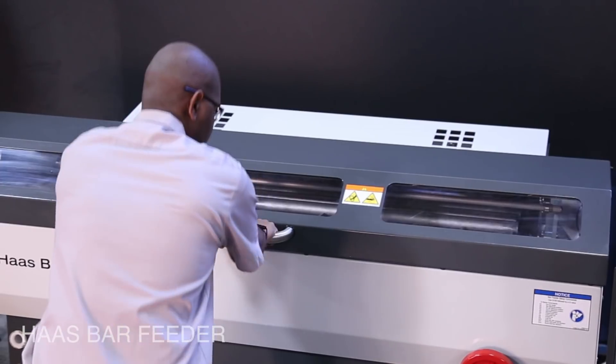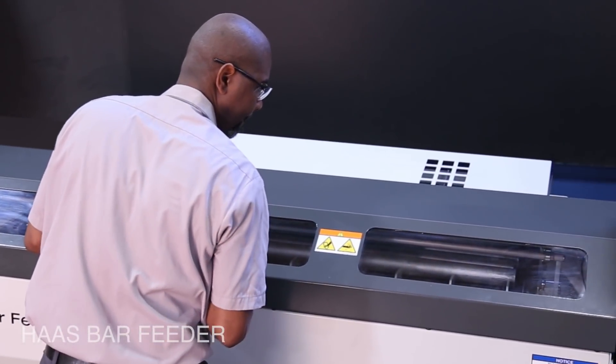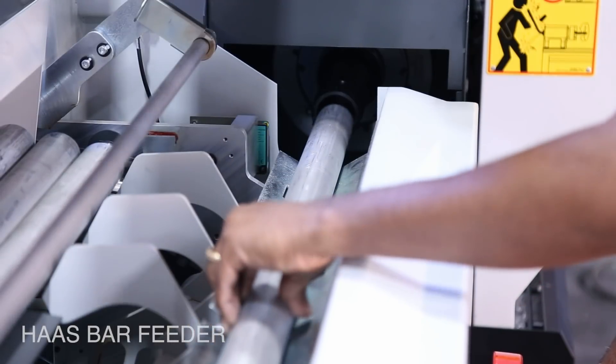This makes changeover a snap as bar diameter changes from job to job. Alignment to the new bar stock size is quick and easy with the adjustment wheel.